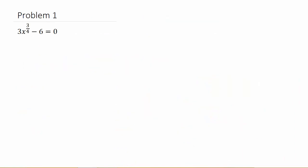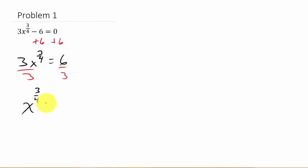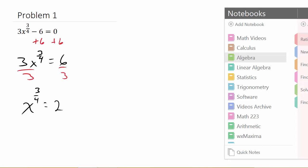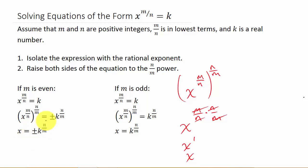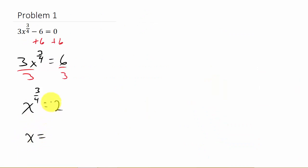For the first example, I have 3x to the 3 fourths minus 6 equals 0. First I'll isolate x to the 3 fourths: add 6 to both sides to get 3x to the 3 fourths equals 6, then divide both sides by 3 to get x to the 3 fourths equals 2. The numerator is 3, which is odd, so x equals 2 raised to the reciprocal, which is 2 to the 4 thirds.